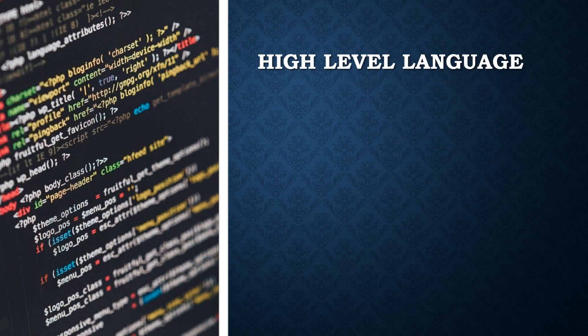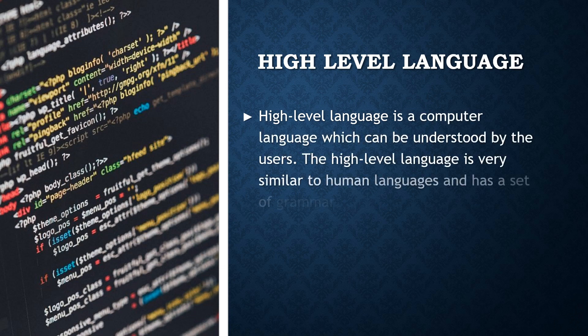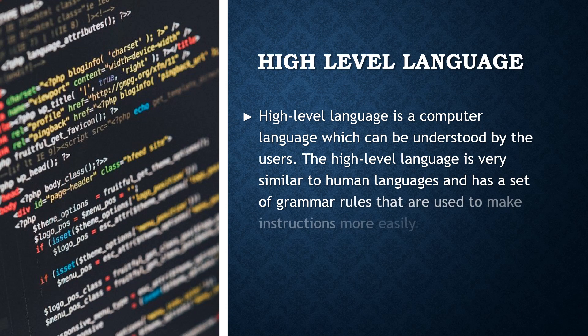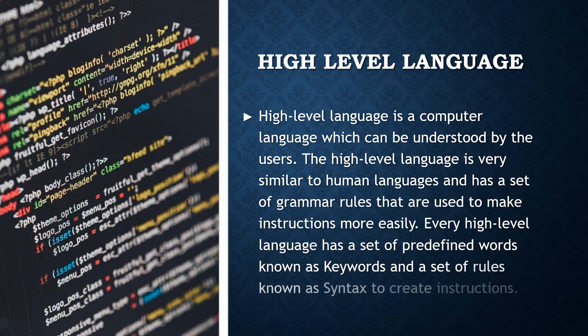High-level language is a computer language which can be understood by the users. High-level language is very similar to human languages and has a set of grammar rules that are used to make instructions more easily. Every high-level language has a set of predefined words known as keywords, and a set of rules known as syntax, to create instructions.